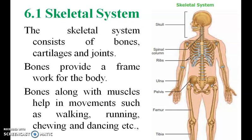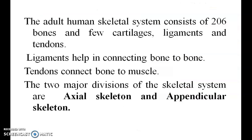Bones provide a framework for the body. Bones, along with the muscles, help in movements such as walking, running, chewing, and dancing. The adult human skeletal system consists of 206 bones and a few cartilages, ligaments, and tendons.